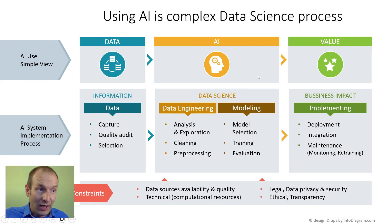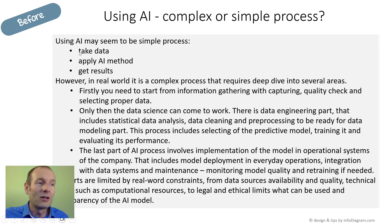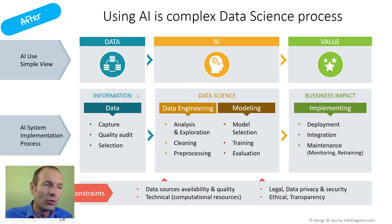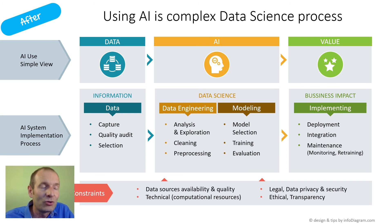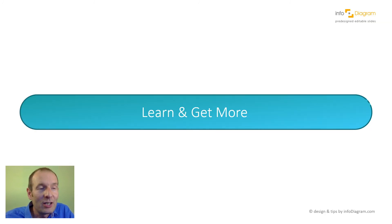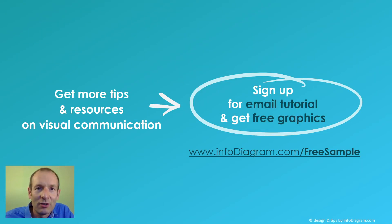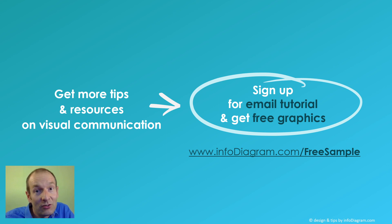So that's the final diagram. We started with a text document and, after working with the text, understanding the content, and finding the words that indicate structure, we changed it to this diagram which is easier to understand and easier to present — because our brain processes visual information much faster than written text. Consider using these techniques for your content. I hope you find it inspirational. To learn more, visit our website infodiagram.com where you can sign up for a free sample and a series of email tutorials on how to visualize content.